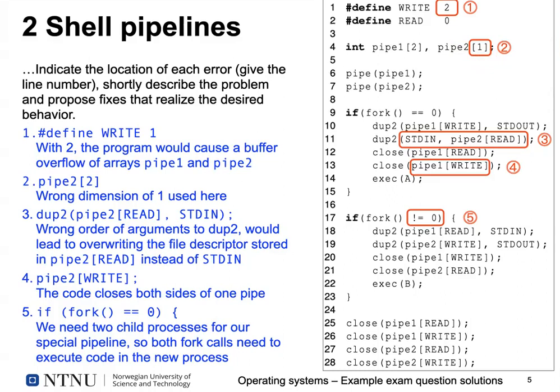Error three was probably easy to spot by visual pattern matching: we accidentally swapped the parameters for dup2. This would copy the standard input file descriptor to the file descriptor in our pipe2 array — the wrong way around — because then we wouldn't be able to do standard input redirection.